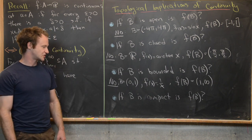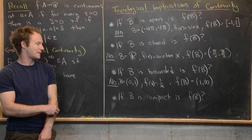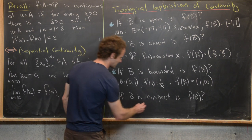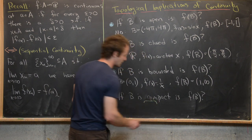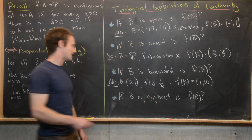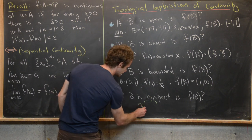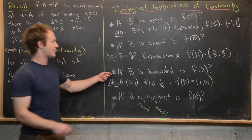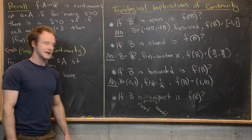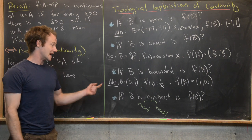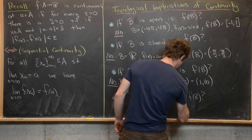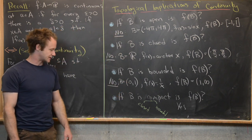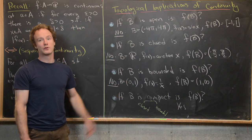The last question: if B is compact, is f(B) compact? Recall that in the real numbers, compactness is equivalent to being both closed and bounded. It turns out that yes, this is true — if you have a compact set, the image of that compact set under a continuous function is also compact. That's what we'll prove for the rest of the video.